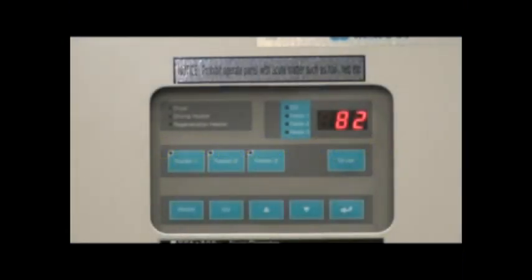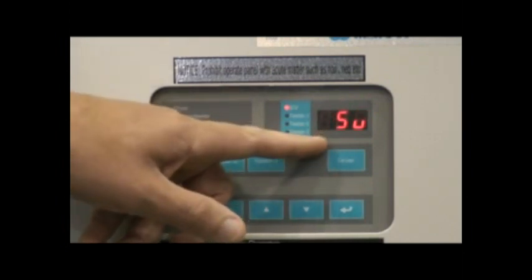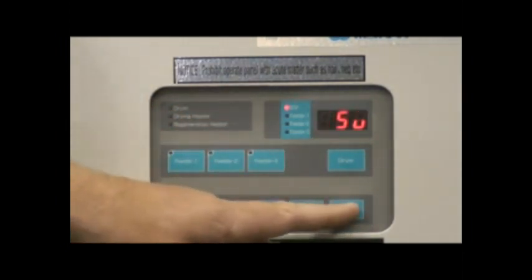The SV or set value setting is for the main drying set point. Determine the temperature you wish to dry at and input it into the control panel. To do this, start by pressing the SV button. You will see the display of SV and the current setting blink alternately.